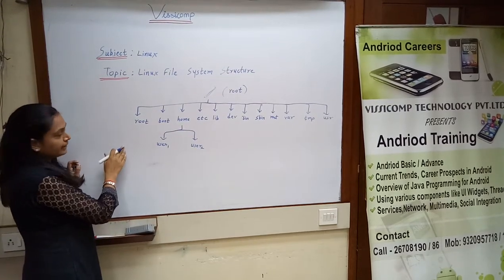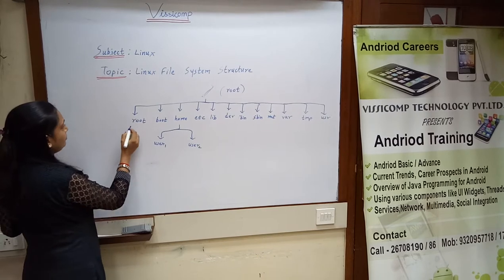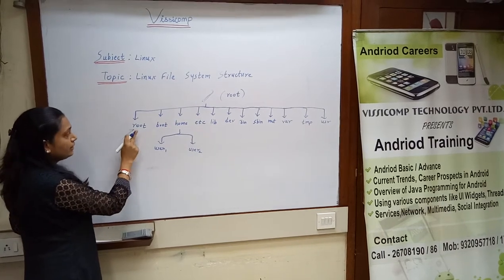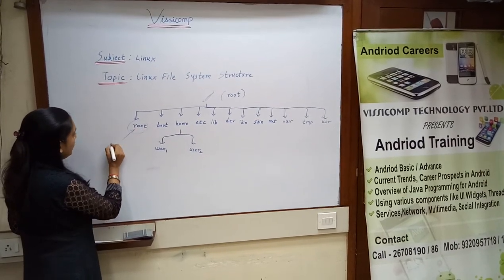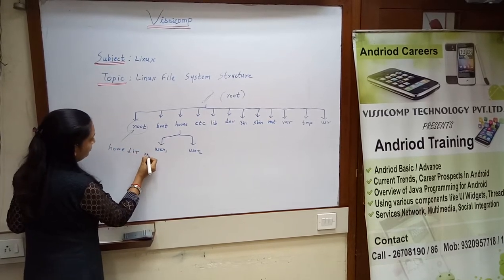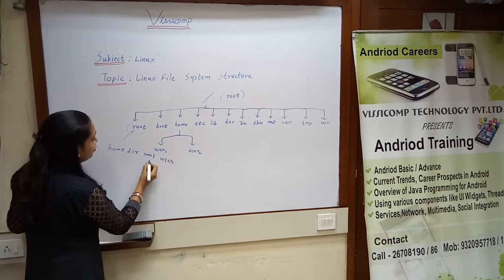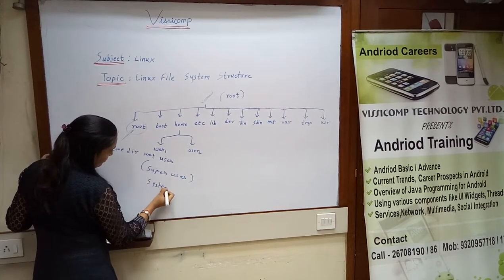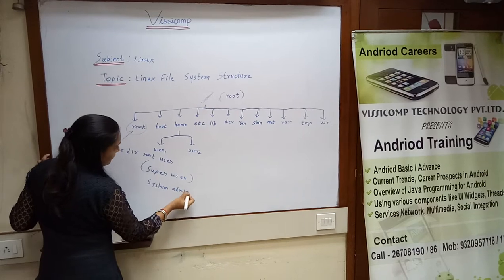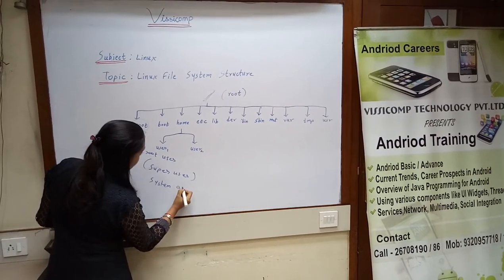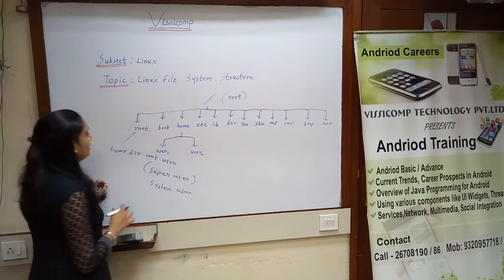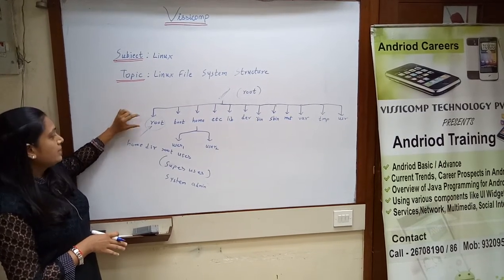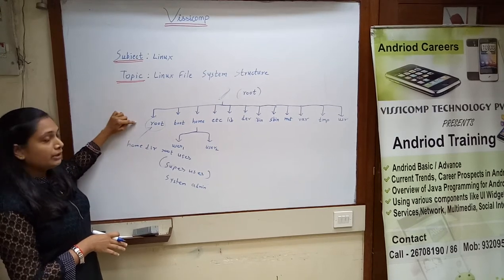Under the root directory, there is one root directory — this is the home directory of the root user. Root user means super user, and super user means system administrator. The system admin manages the system, and all administrator folders are stored in this root directory.